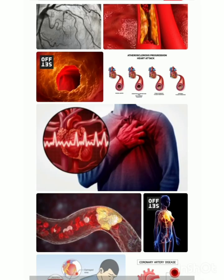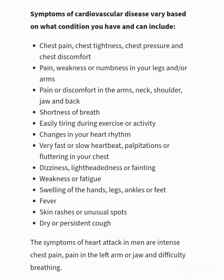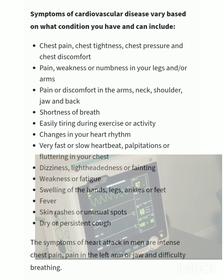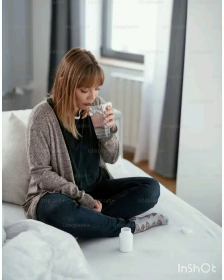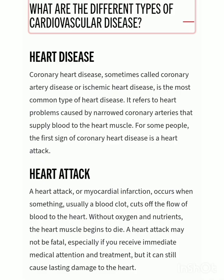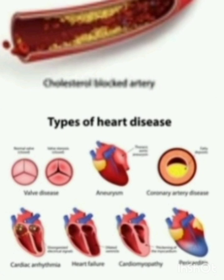Symptoms vary based on what condition you have and can include chest pain, discomfort in the arms, weakness and numbness, shortness of breath, easily tiring during exercise, changes in your heart rhythm, very fast or slow heartbeat, dizziness, weakness or fatigue, swelling of the hands, legs, ankles or feet, fever, and skin discoloration. Now let's look at the different types of cardiovascular diseases.